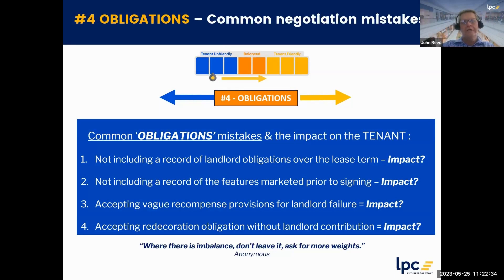I'm handling the last two topics which are linked: obligations and guarantees. I don't have a slide to illustrate this, but when it comes to obligations and guarantees, think of using our barometer — from 10 tenant-unfriendly on the left to 10 tenant-friendly on the right. The weakest position for a tenant is where tenants have very strong obligations and guarantees while landlords have very few within the lease, or poorly articulated ones.